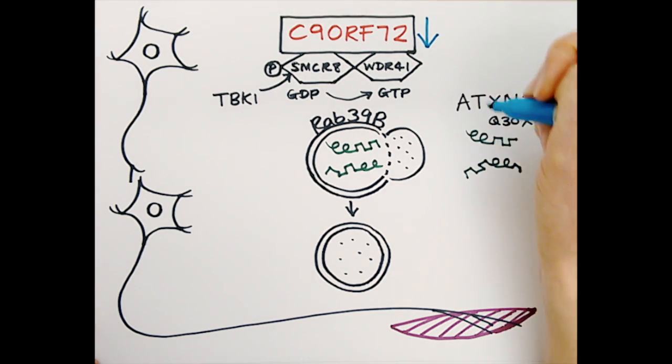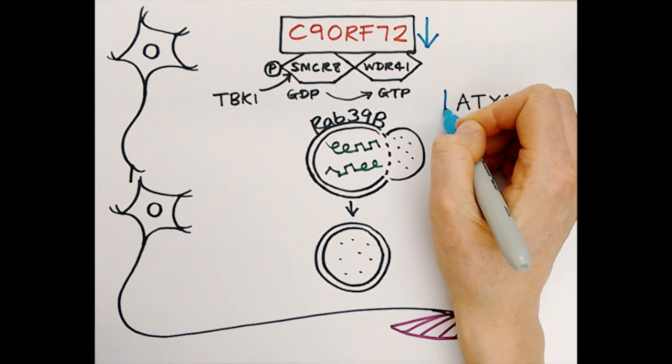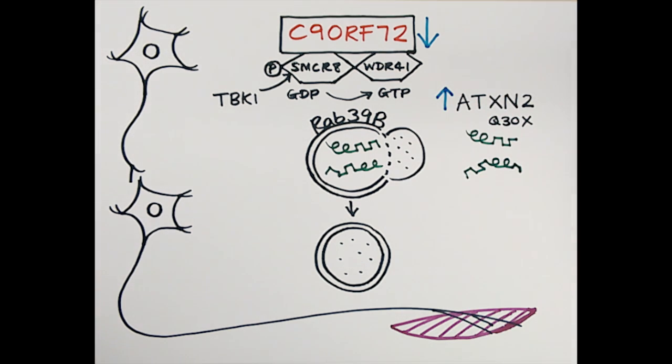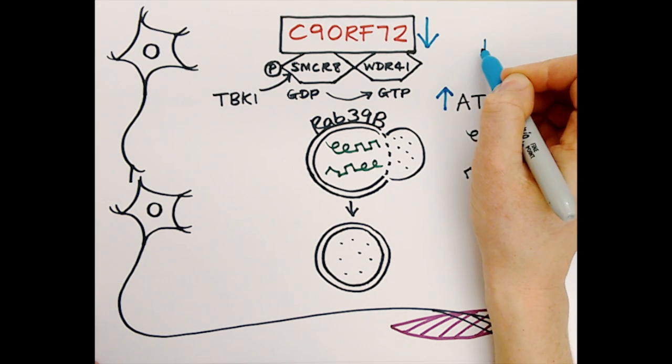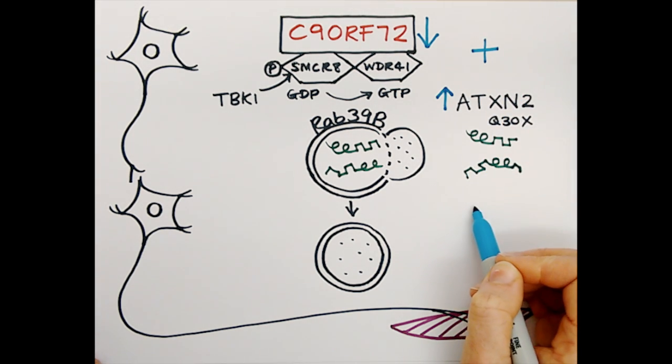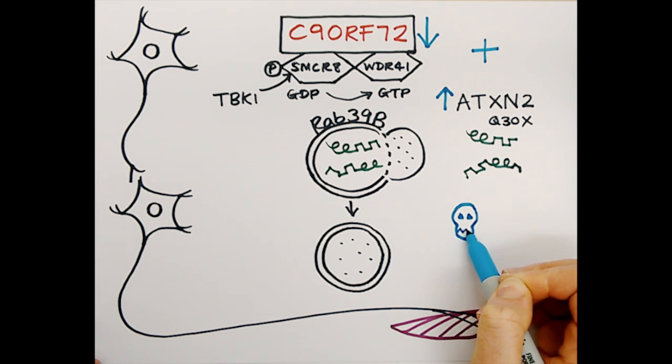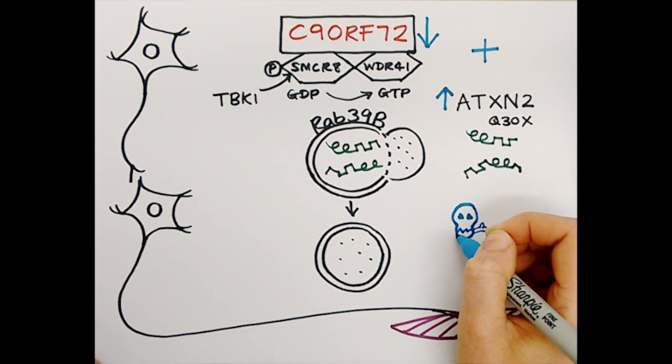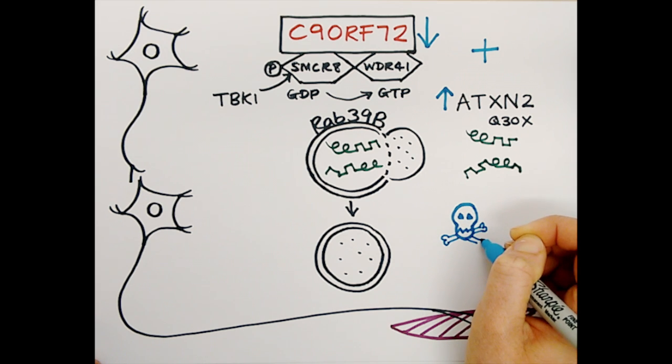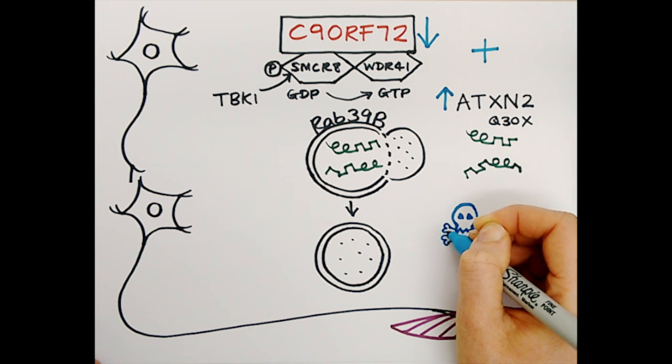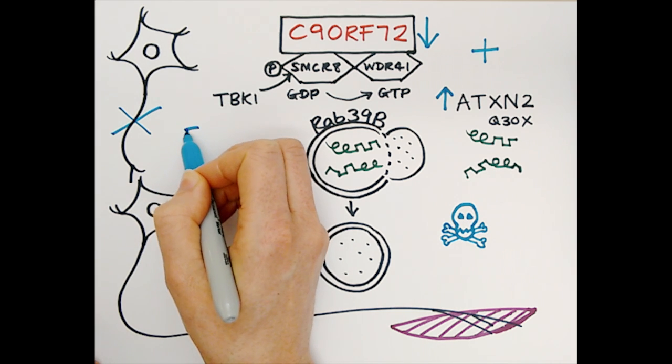So, this feeds into a double-hit mechanism for disease. Whereas loss of function, or haploinsufficiency of C9-ORF72, is not alone sufficient to cause neuronal cell death, this synergizes with other genetic modifiers, together leading to a greater accumulation of toxic proteins within the cell. This, in turn, then leads to neuronal degeneration, which manifests as muscular or neurological symptoms in patients.